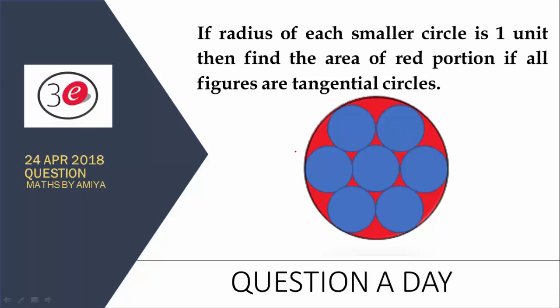And this one is the easiest question I have ever posed on a question a day. We know the radius of this one is nothing but 1. So we can say this one is 1, and here is also 1. So we can say the total radius of the bigger circle is nothing but 3, and the smaller radius is nothing but 1. We have to find the area of the red portion.